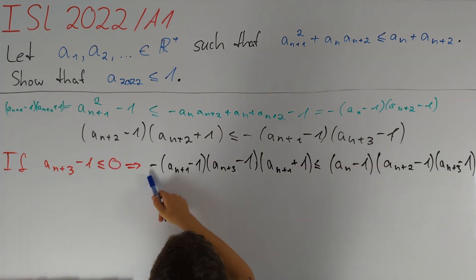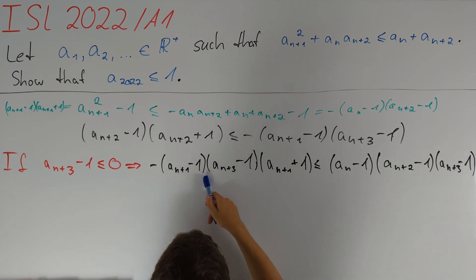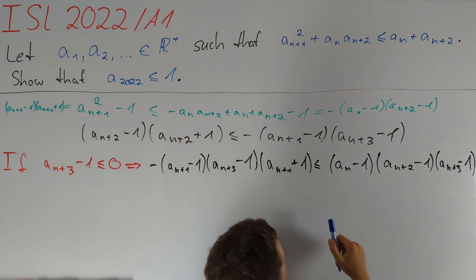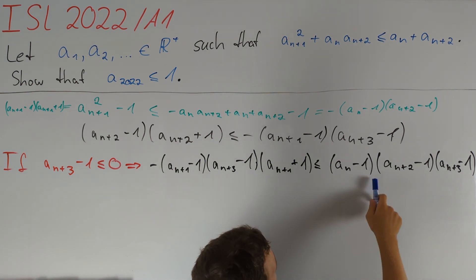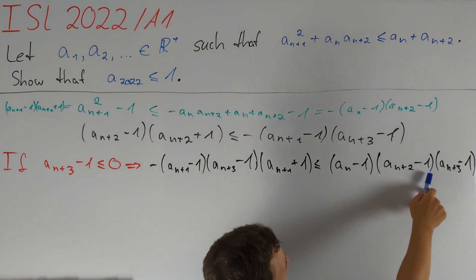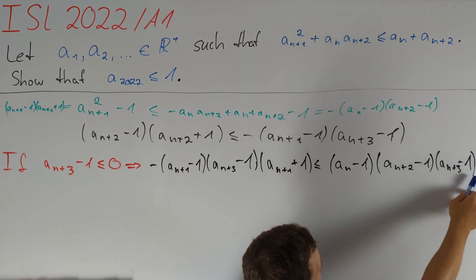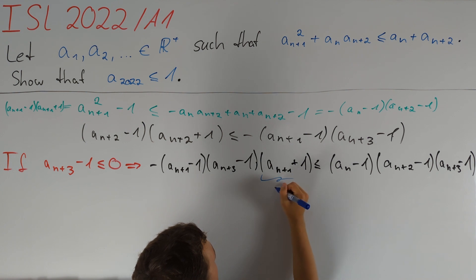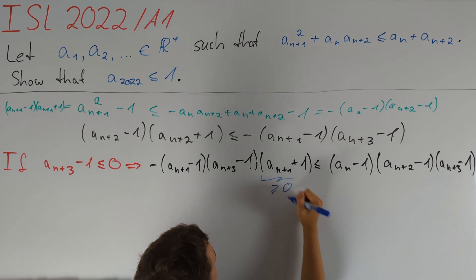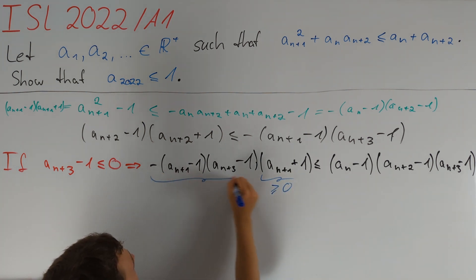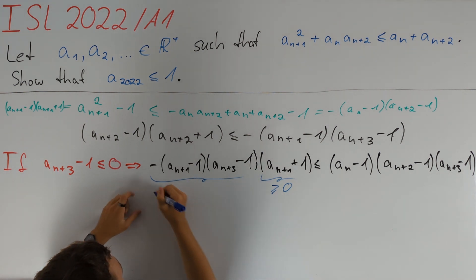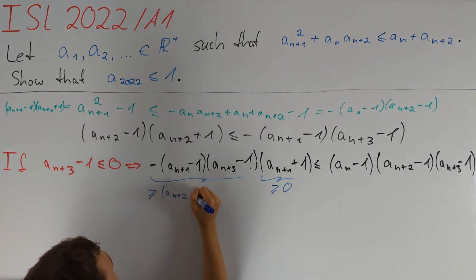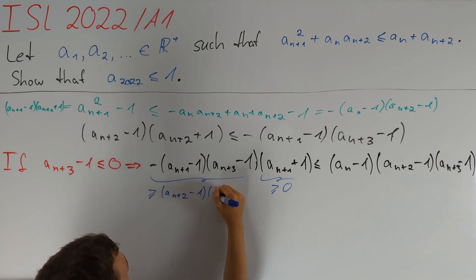In this case, if minus (aₙ₊₃ minus one) is non-negative the inequality sign does not change after multiplication. We thus get that minus (aₙ₊₁ minus one)(aₙ₊₃ minus one)(aₙ₊₁ plus one) is less than or equal to (aₙ minus one)(aₙ₊₂ minus one)(aₙ₊₃ minus one). Note that aₙ₊₁ plus one is greater than or equal to zero, and therefore all of this is greater than or equal to (aₙ₊₂ minus one)(aₙ₊₂ plus one).